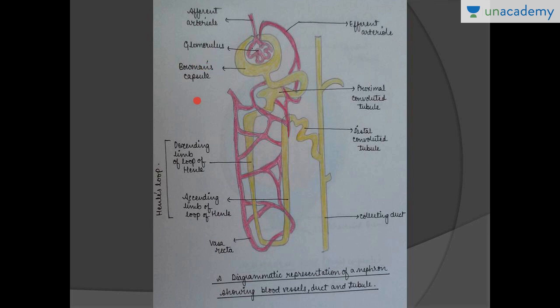Near the glomerular filtrate is the Bowman's capsule. The Bowman's capsule is a two-layered structure having a visceral layer and a parietal layer. The visceral layer consists of specific and special epithelial cells known as podocytes, which help in the formation of the filtration slit, while the parietal layer is composed of normal simple squamous epithelium.